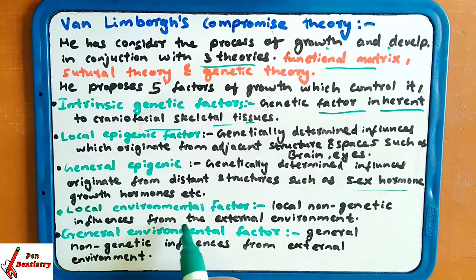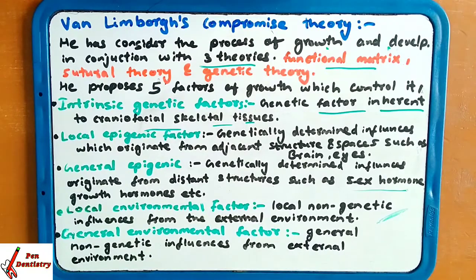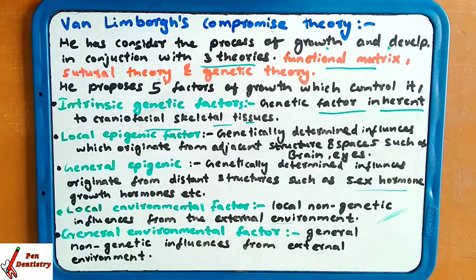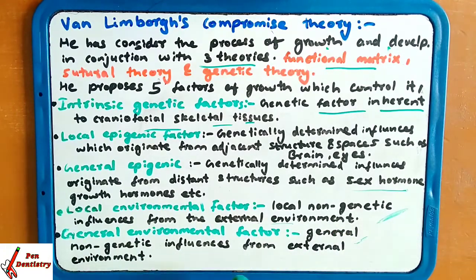The fourth factor is the local environmental factor: non-genetic influences from the external environment affecting local structures. The fifth factor is the general environment factor: general non-genetic influences from the external environment. So in local factors, the external environment influences local non-genetic factors, and in general environment, the external environment factor is also present.